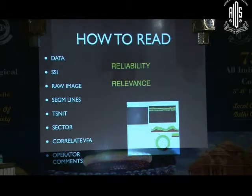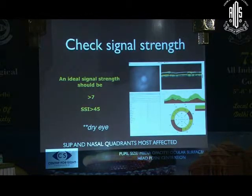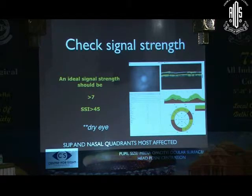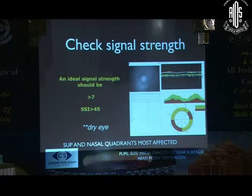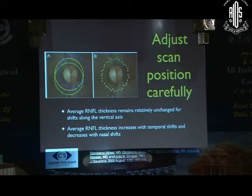When reading a scan, first assess whether it is reliable, then consider how to interpret the data collected and how relevant it is. The most important indicator of reliability is the signal strength index — any scan with values less than 45 in the OptiView should not be read further, as it would give a falsely low interpretation of the RNFL. Make sure eyes are well lubricated and pupils are dilated if there is any cataract. Ensure the scan is well centered, as horizontally or vertically deviated scans will affect the RNFL measurement.